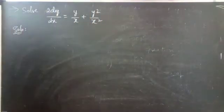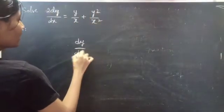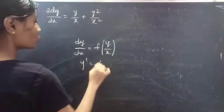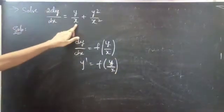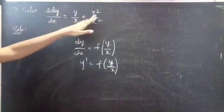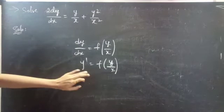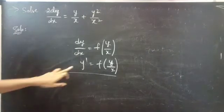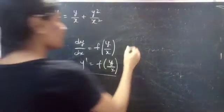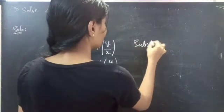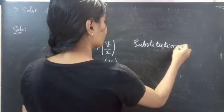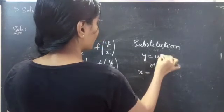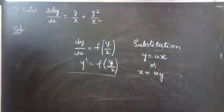Since the differential equation is of the form dy/dx equals f(y/x), or y prime equals f(y/x) — you can see it is of the form y/x plus (y/x) squared — which is of the form y prime equals f(y/x). If the equation is of this form, we can use a substitution: y equals ux or x equals uy, to reduce the equation into variable separable form.